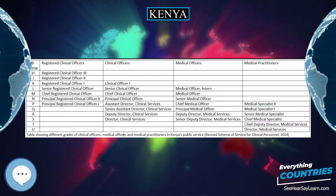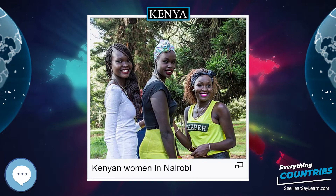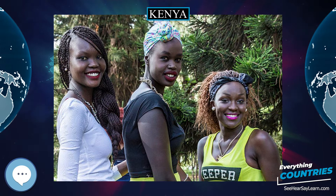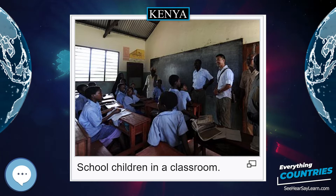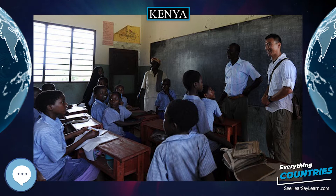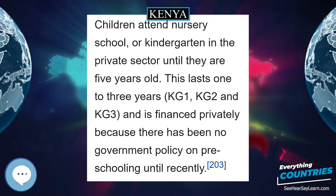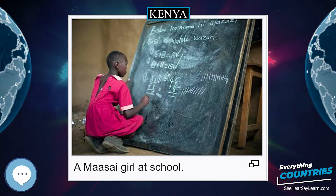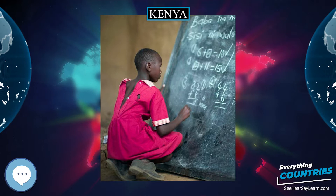At 580,367 square kilometers (224,081 square miles), Kenya is the world's 47th largest country after Madagascar. It lies between latitudes 5 degrees north and 5 degrees south and longitudes 34 and 42 degrees east. From the coast on the Indian Ocean, the low plains rise to central highlands. The highlands are bisected by the Great Rift Valley, with a fertile plateau lying to the east. The Kenyan Highlands are one of the most successful agricultural production regions in Africa. The highlands are the site of the highest point in Kenya and the second highest peak on the continent — Mount Kenya, which reaches 5,199 meters (17,057 feet) and is the site of glaciers.